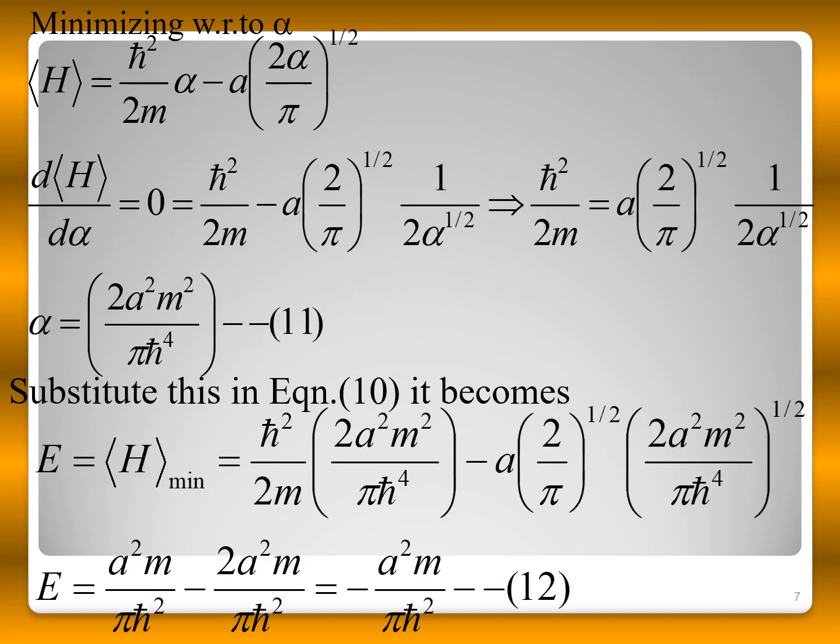Using the variational principle, we minimize ⟨H⟩ with respect to α by differentiating and setting it equal to zero. Solving gives α = (2a²m)/(πℏ²). Substituting this back, the ground state energy is E = −a²m/(πℏ²).